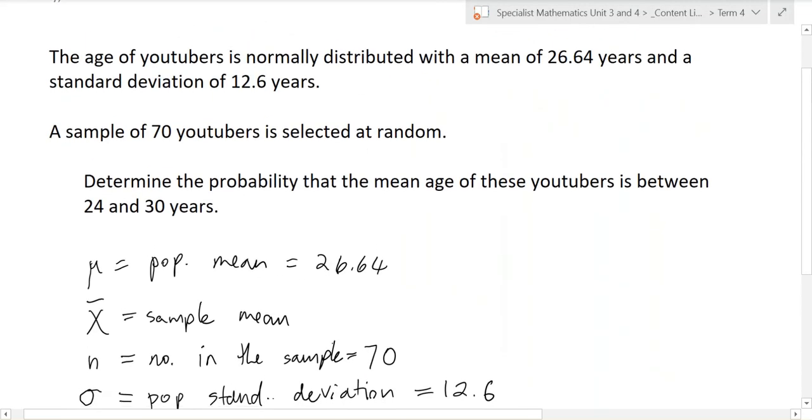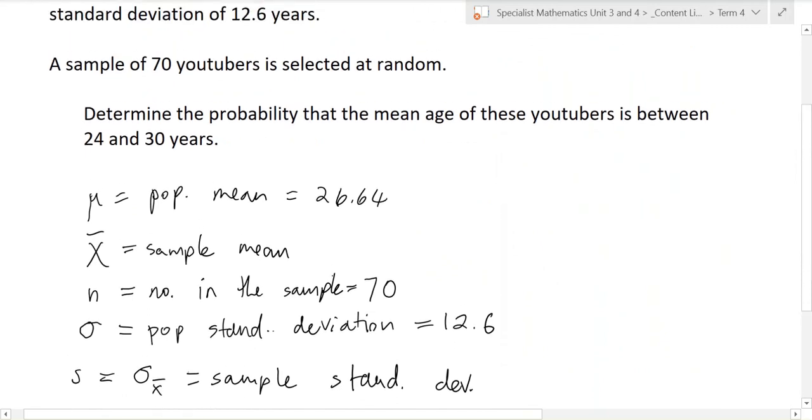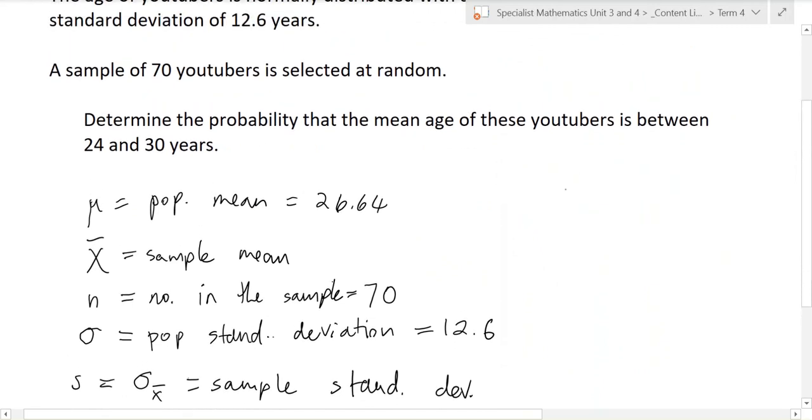First of all, we need to figure out the sample standard deviation. So we don't know that. So we can use this rule. The sample standard deviation is the normal standard deviation divided by the square root of N.